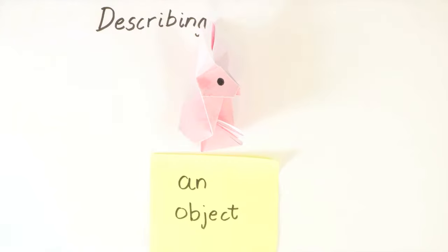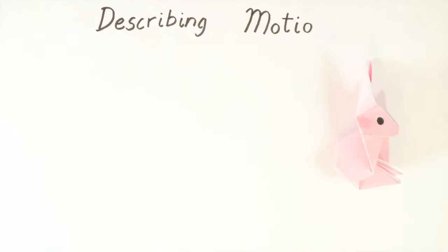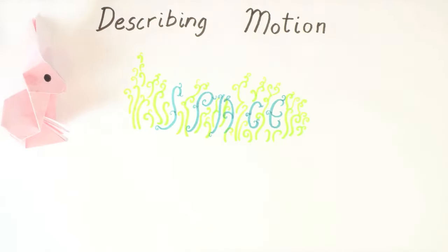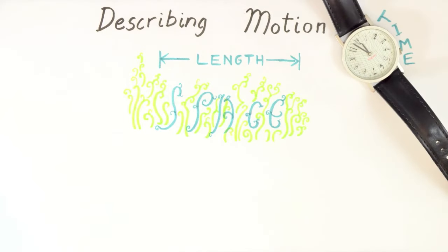If we want to describe an object's motion, it's clear we're going to need a physical quantity that says something about space. We can use length for this purpose. It's also pretty clear that it will be important to specify time as a physical quantity to characterize motion.